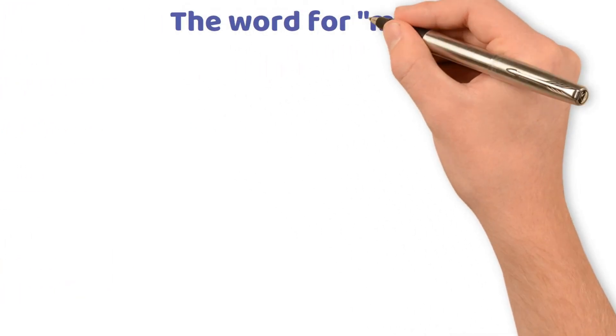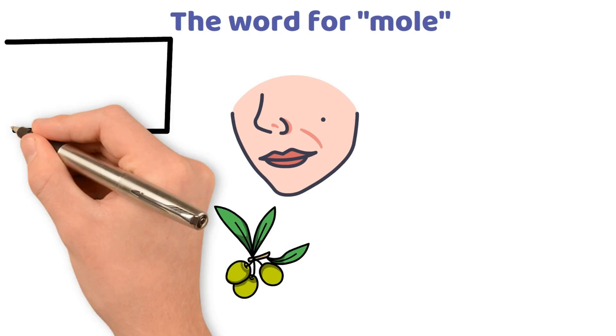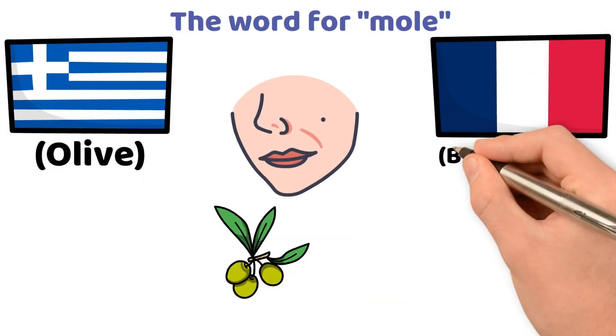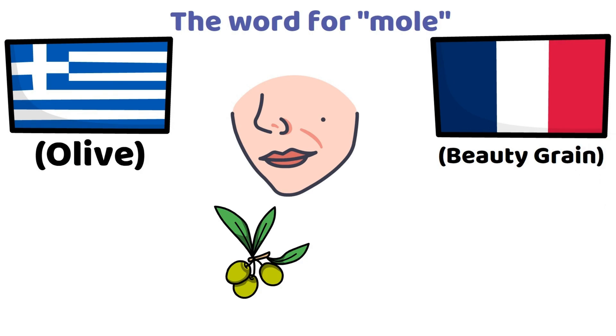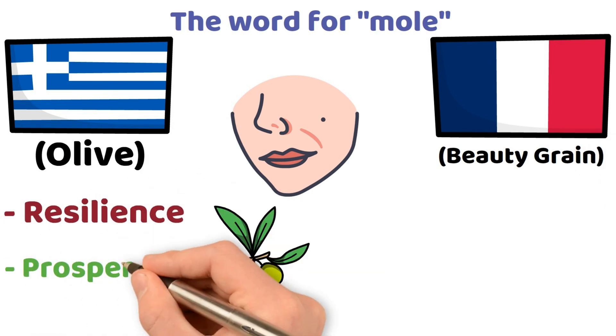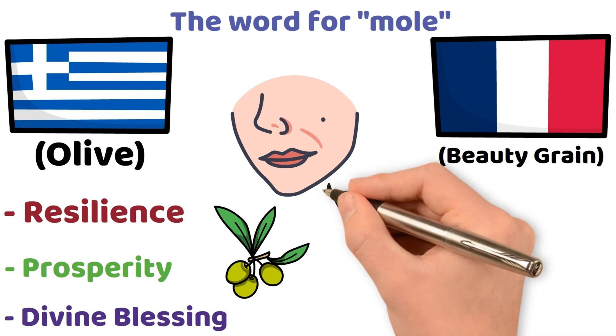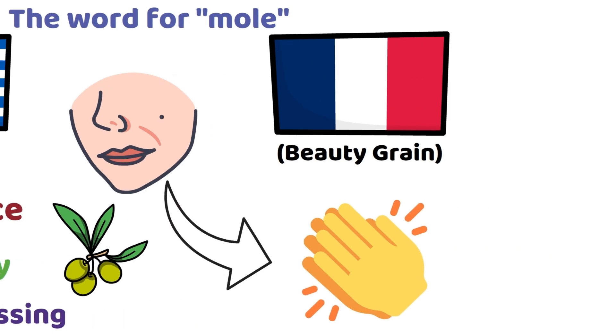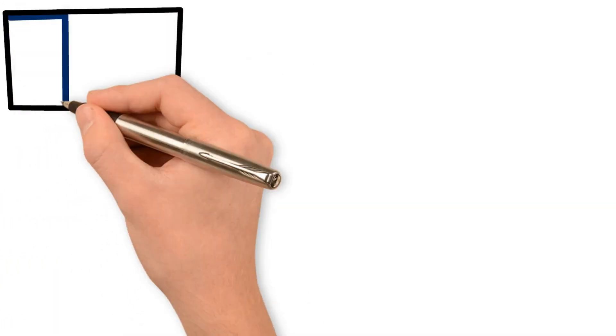This adaptability is one of the most enriching aspects of becoming multilingual. Take, for instance, the word for mole in Greek, which translates as olive, whereas in French it's described as a beauty grain. In Greek culture, where the olive tree symbolises resilience, prosperity and even divine blessing, using olive to describe a mole reveals a deep cultural appreciation for this treasured symbol.